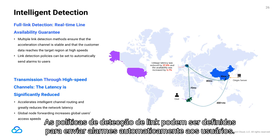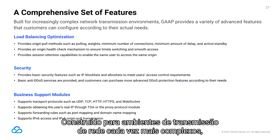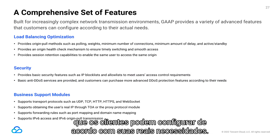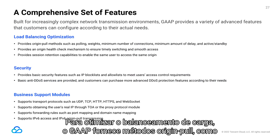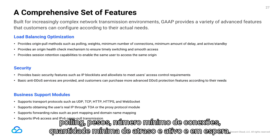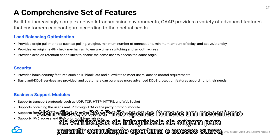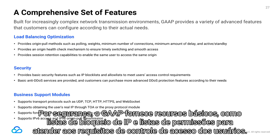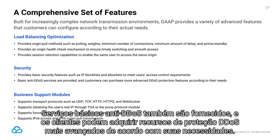Link detection policies can be set to automatically send alarms to users. Built for complex network transmission environments, GAAP provides advanced features such as load balancing optimization, security, and business support modules. To optimize load balancing, GAAP provides origin pull methods such as polling, weights, minimum number of connections, minimum amount of delay, and active and standby. GAAP also provides an origin health check mechanism to ensure timely switching and smooth access, as well as session retention capabilities to enable the same user to access the same origin. For security, GAAP provides IP block lists and allow lists, basic anti-DDoS services, and options to purchase more advanced DDoS protection.